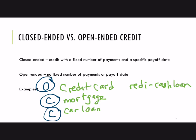A Ready Cash loan is a loan sometimes offered by banks where you're approved for a certain amount, say $2,000. People often use these as emergency funds. You get approved for the loan and it sits in a separate account. As needed, you can draw on that loan — for example, after a major car accident. This activates the loan and you make monthly payments until it's paid off. This is another example of open-ended credit: there is no fixed payoff date and no fixed number of payments.